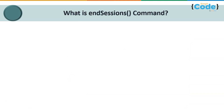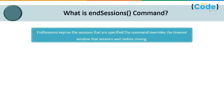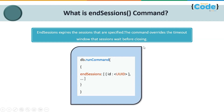The end sessions command expires specified sessions, overriding the time window that sessions wait before closing. This method closes an existing session. If a transaction was associated with that session, the transaction will be aborted once the end session command is issued. After calling this method, the application should not invoke any other commands on that session. The syntax is: db.runCommand({ endSessions: [{ id: UUID(...) }] }).